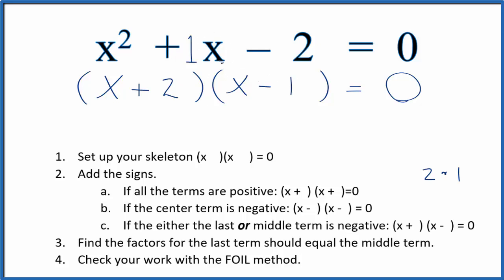But let's check our work, so we can use the FOIL method to do that. X times x, that's the first terms. Then we have outside, x times minus 1, so we have minus 1x.